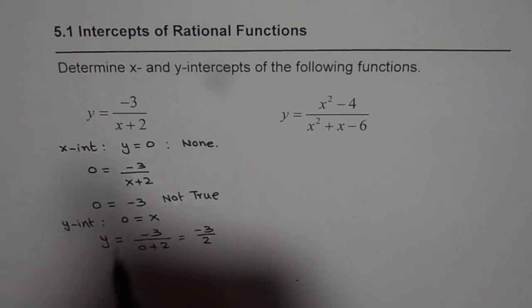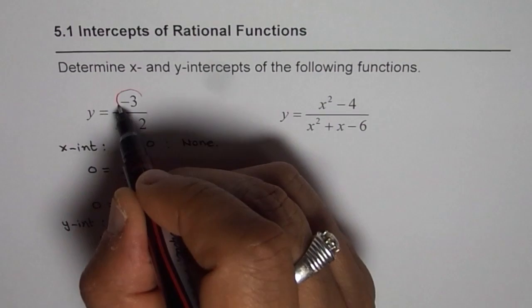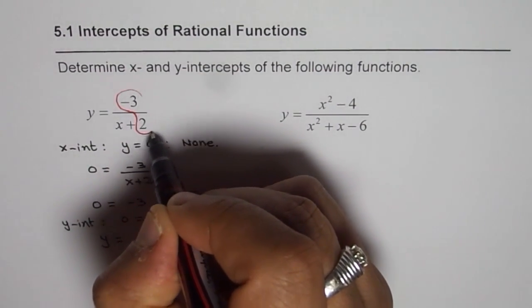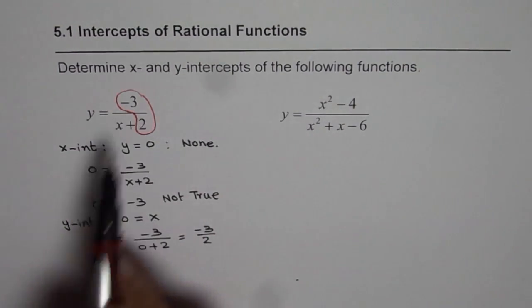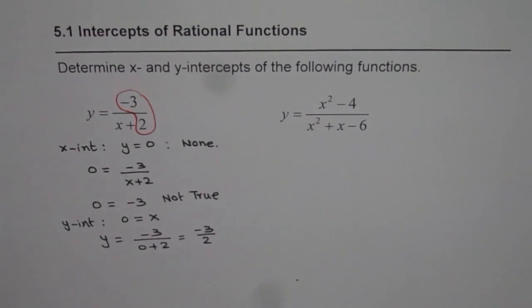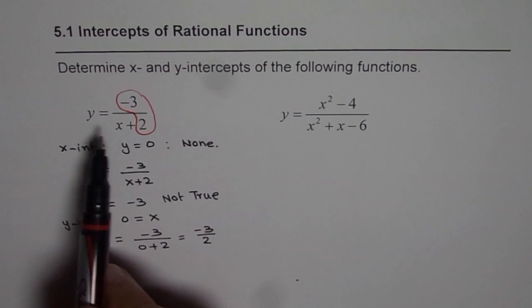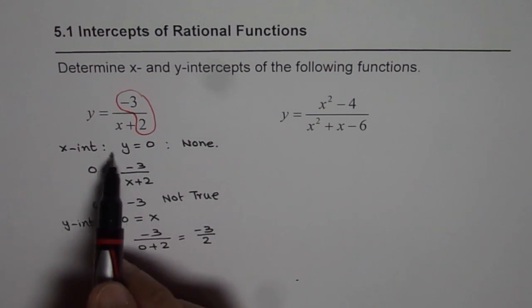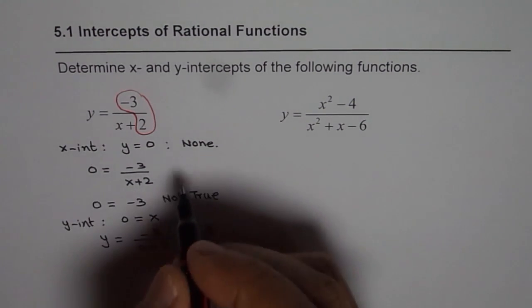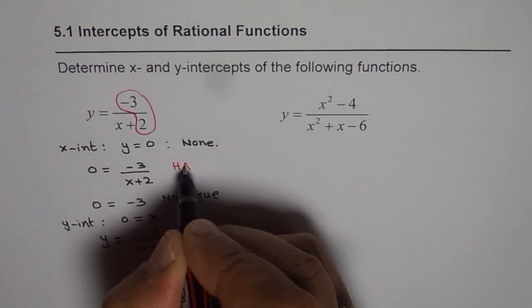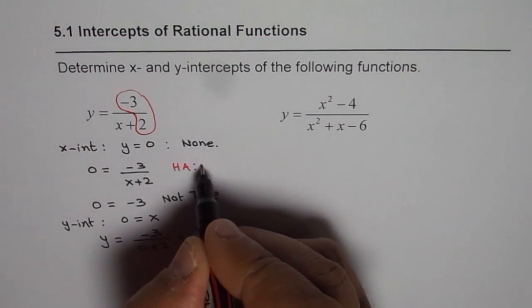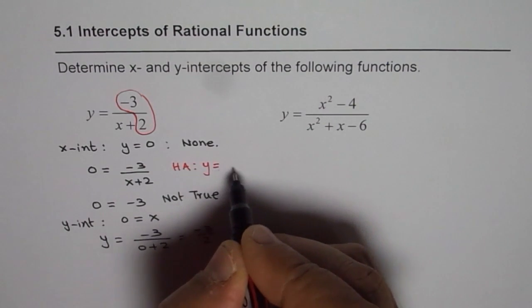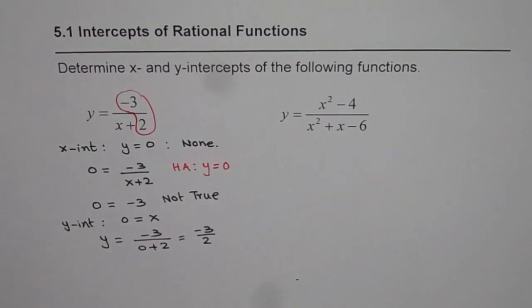In a reciprocal function, the y intercept is this value. If I put x as 0 we can see this value is the y intercept. A reciprocal function like this will never have any x intercept. It has a horizontal asymptote. The function approaches 0 but is never 0. So we have a horizontal asymptote at y equals 0 for such a function.